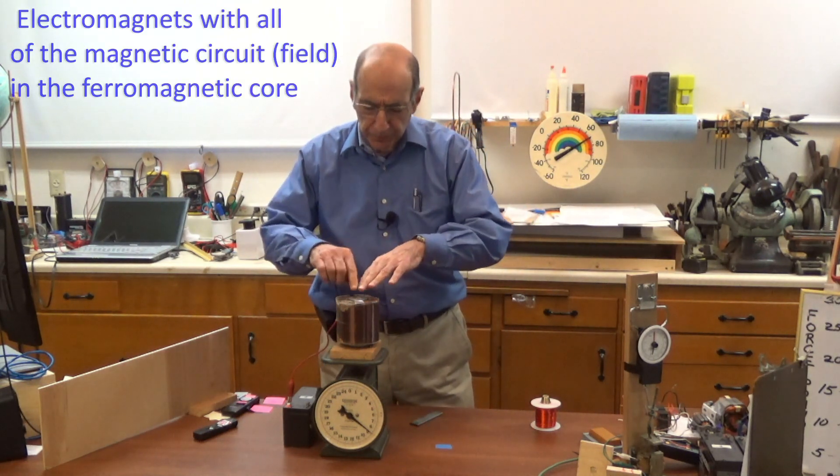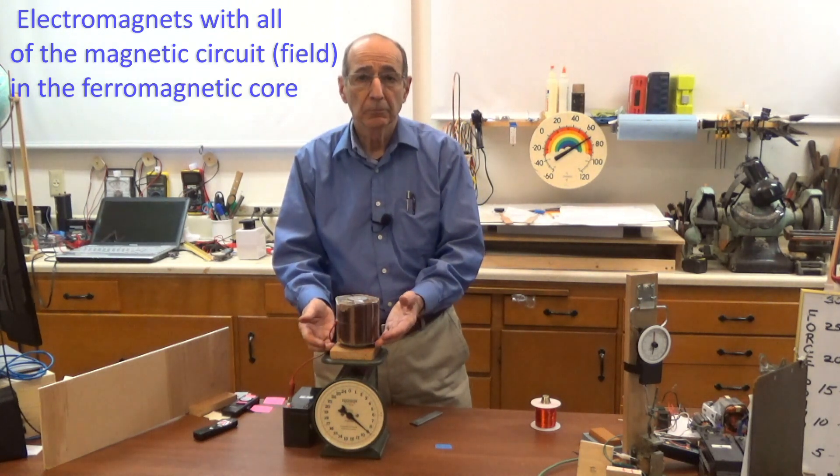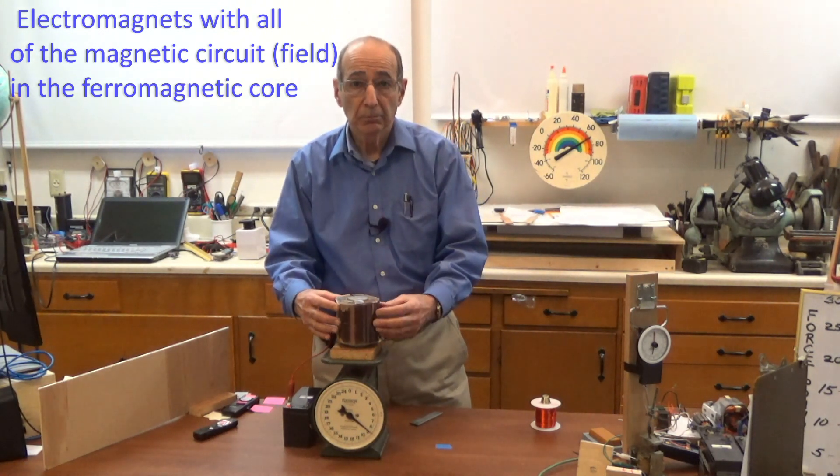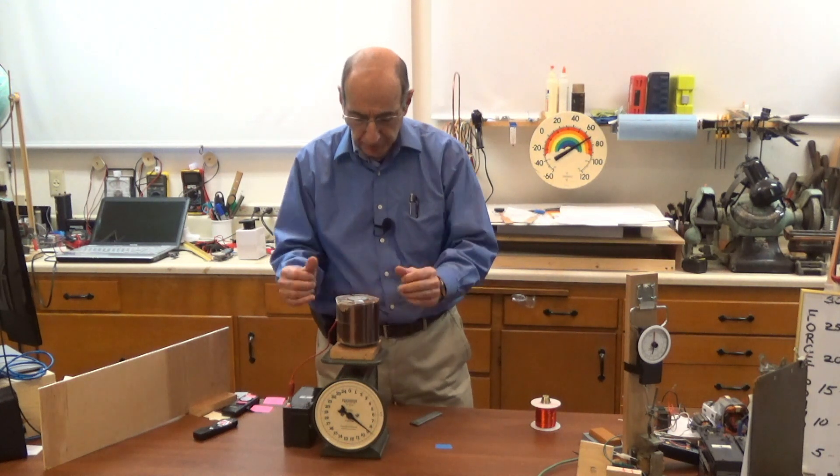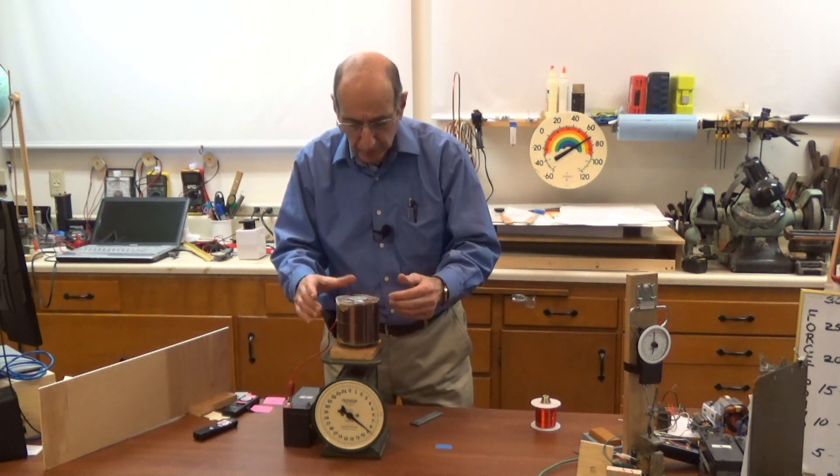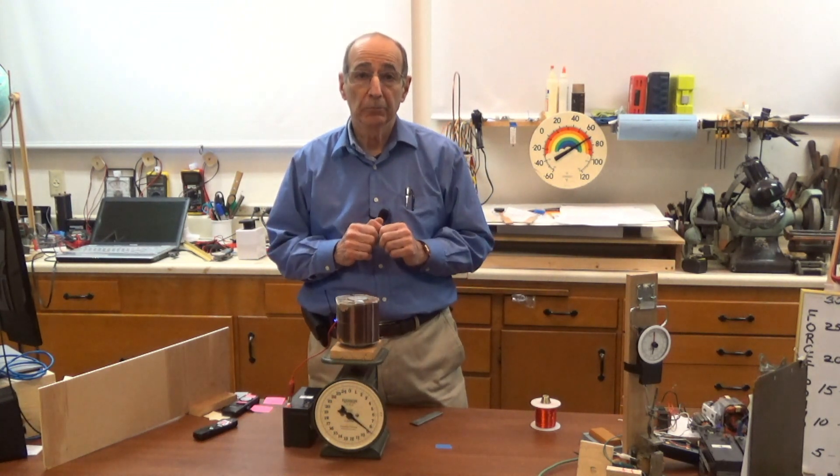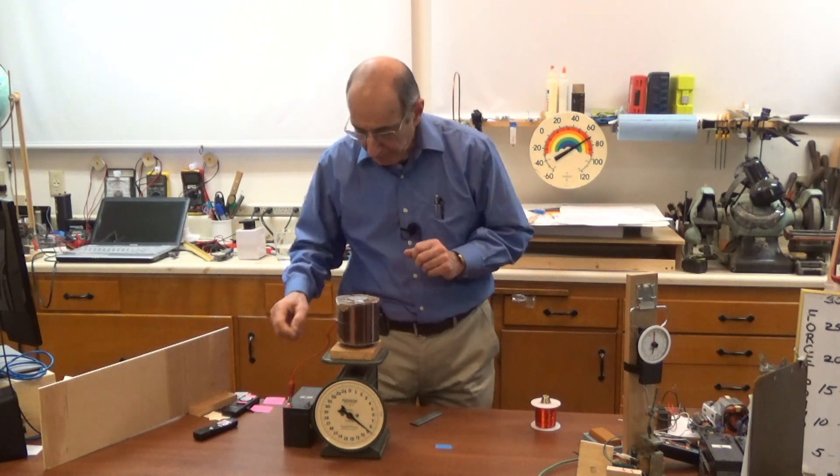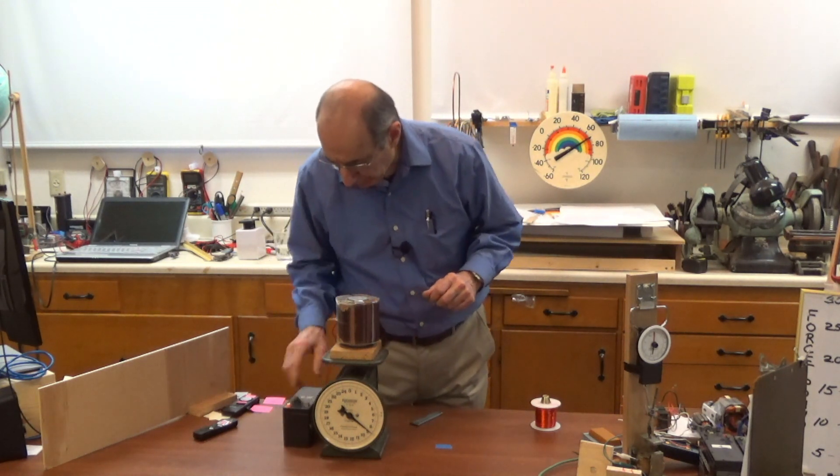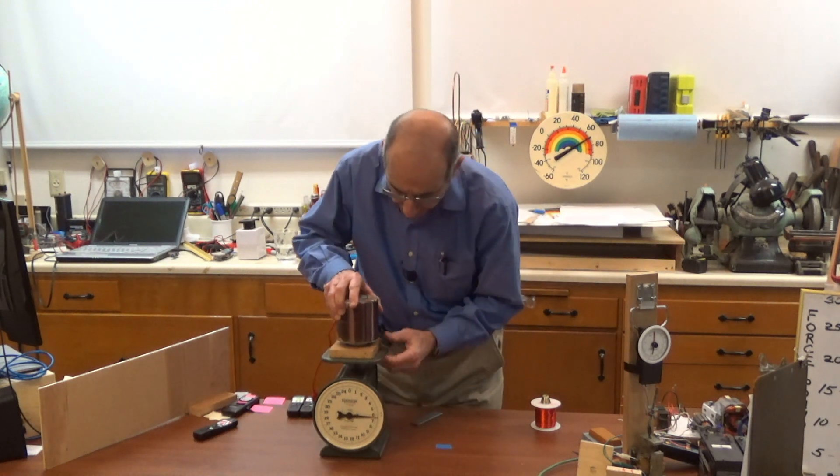Now when we're able to put the entire magnetic circuit in steel and permeable steel, we reinforce the magnetic field of just the coil by far more than the 36 to 1. So let's do another demonstration with another piece of equipment.